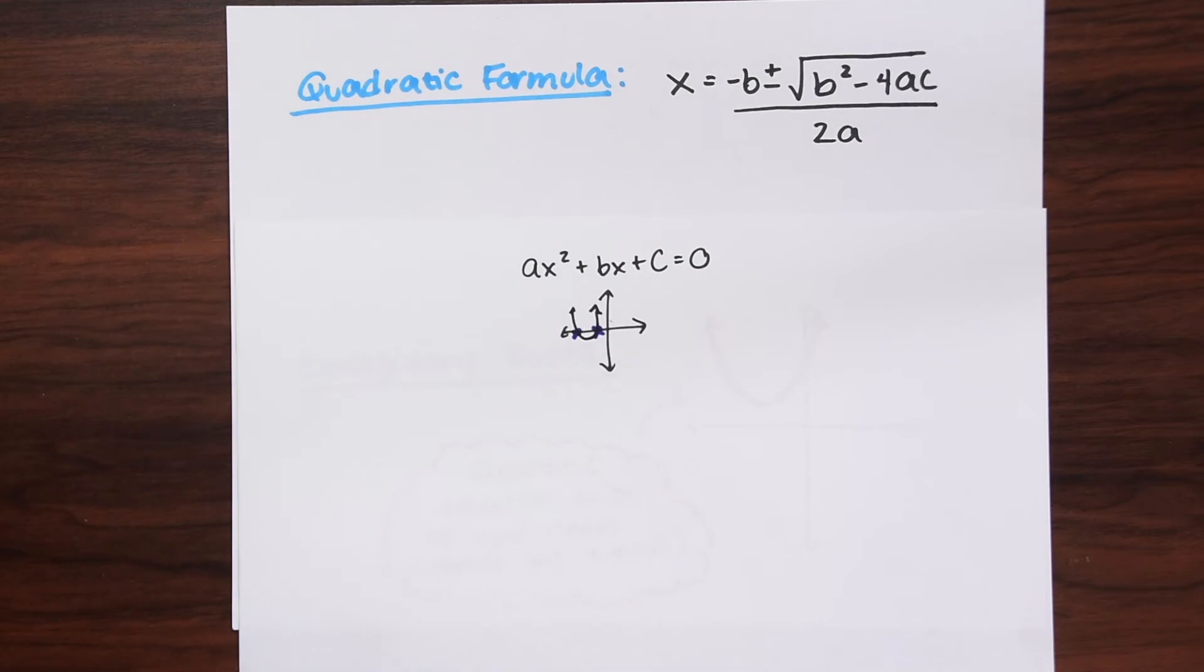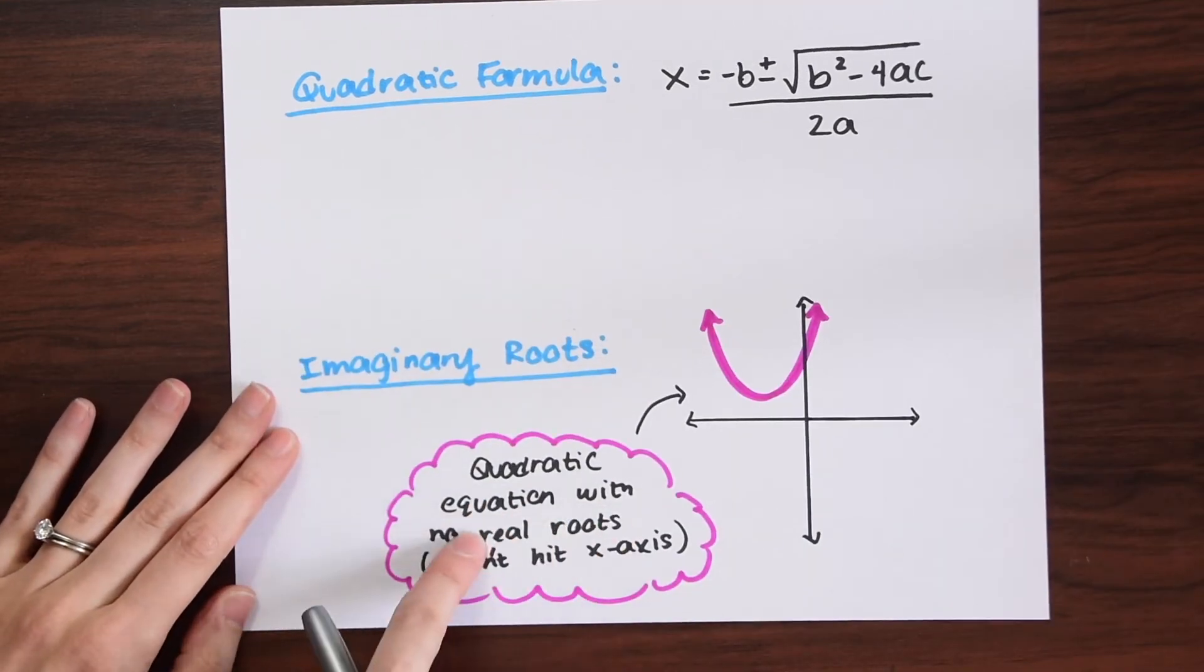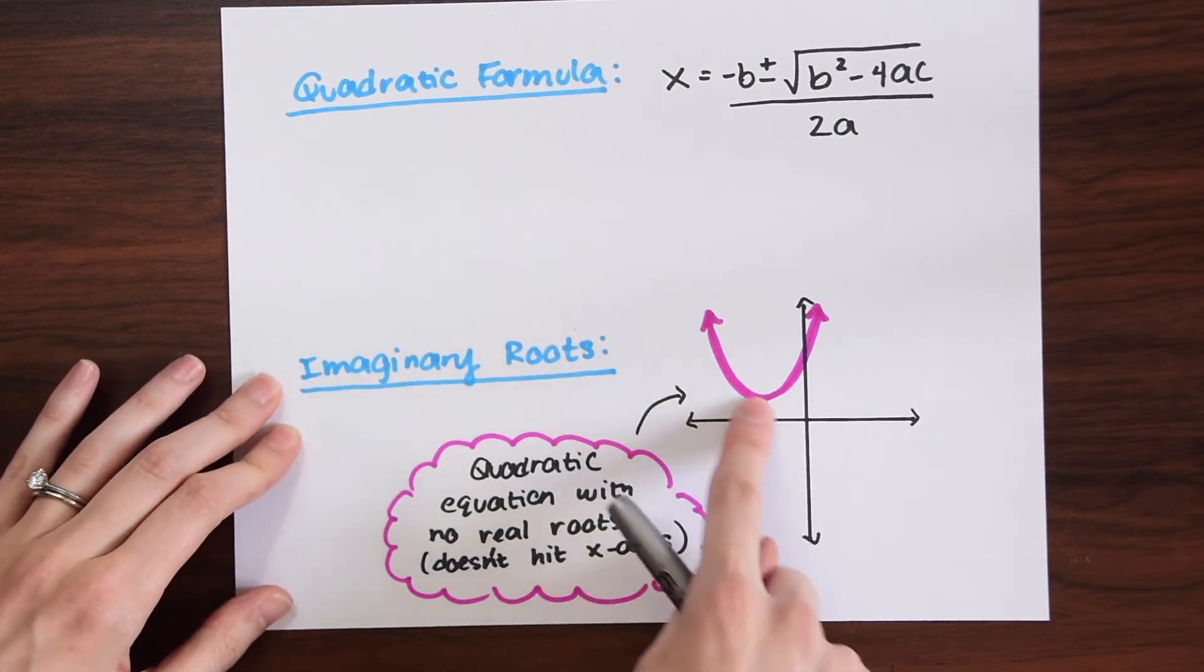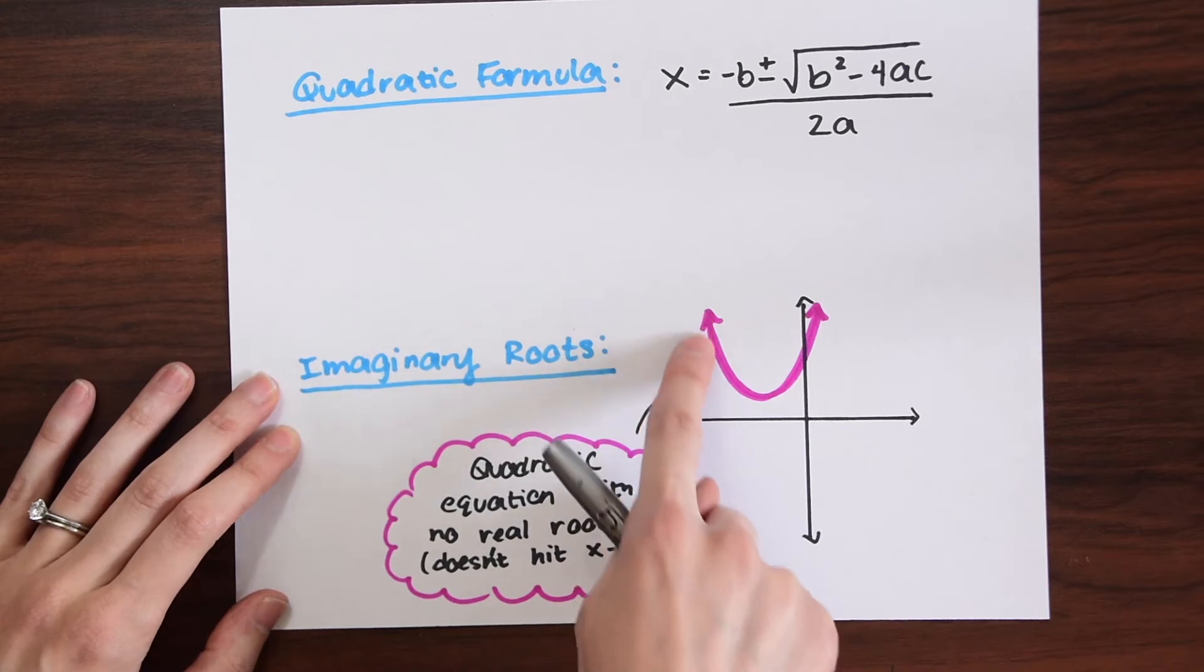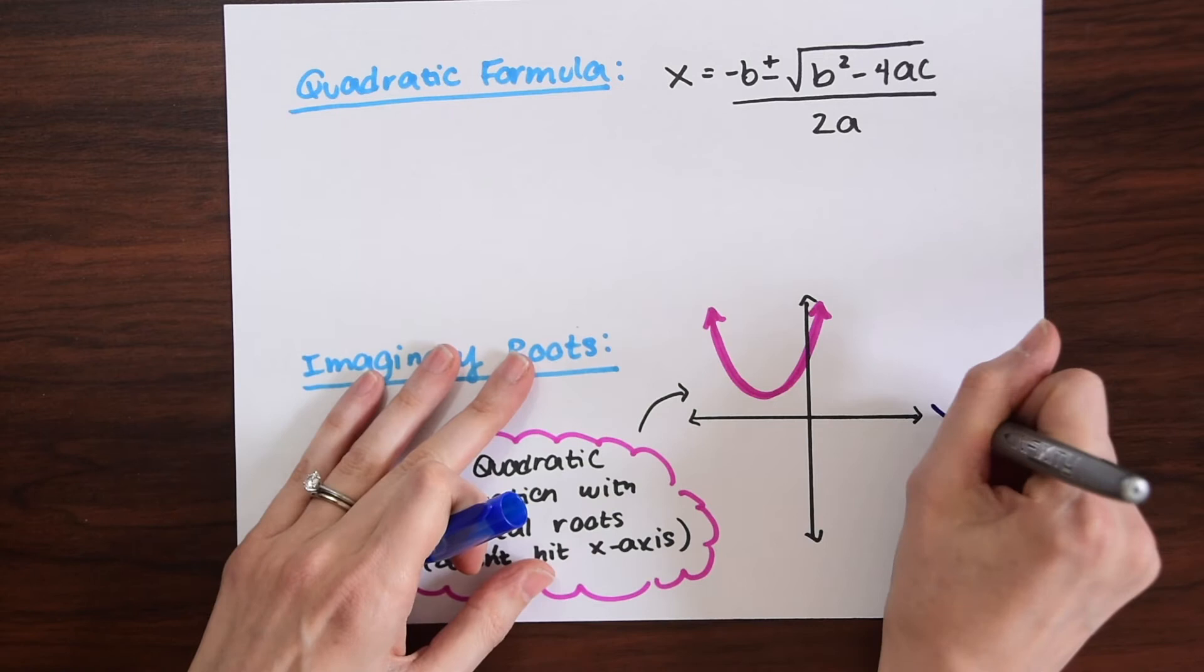But when we have imaginary solutions, the graph never actually hits the x-axis. When we have imaginary roots, the quadratic equation does not have any real roots and never hits the x-axis. Notice that in this quadratic equation, the parabola is just floating and never hits the x-axis.